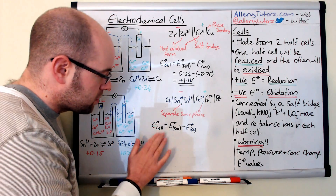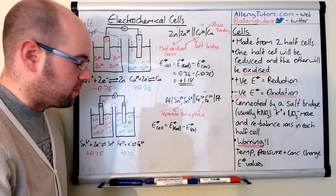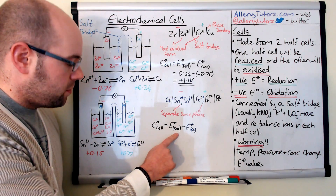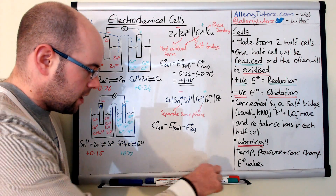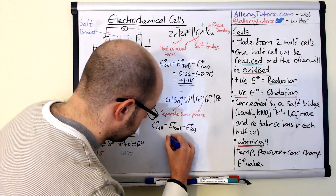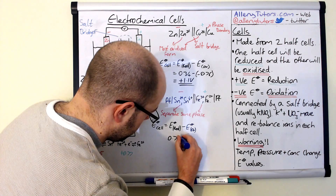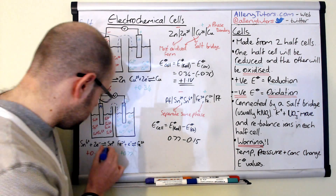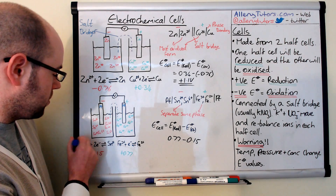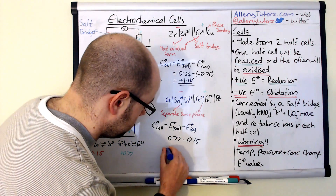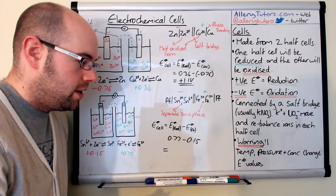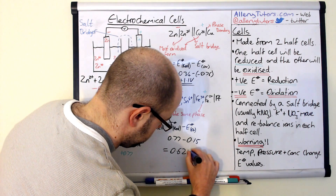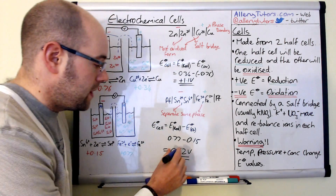To work out the E° of this cell, we again take E° of the reduced form minus E° of the oxidised form. The reduced form is Fe³⁺/Fe²⁺ at +0.77 V, and the oxidised form is Sn²⁺/Sn⁴⁺ at +0.15 V. So: E°cell = 0.77 − 0.15 = 0.62 V. This is the reading we would see on the voltmeter.